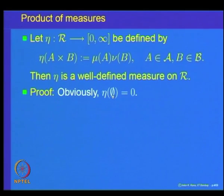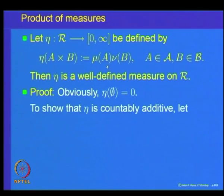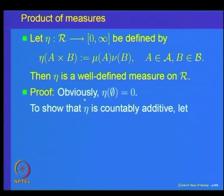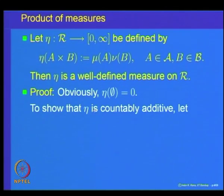To implement this, let us define η on rectangles A×B by η(A×B) = μ(A)·ν(B). Obviously it is a well-defined set function and we want to claim that this is actually a measure. Clearly η(∅) = 0 since if A or B is the empty set, the product is 0. We want to show that η is countably additive.